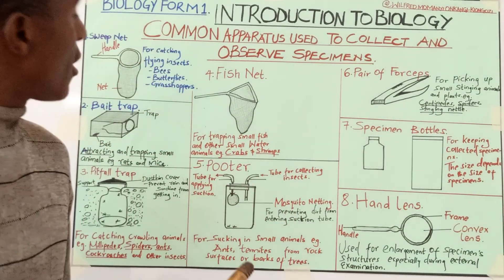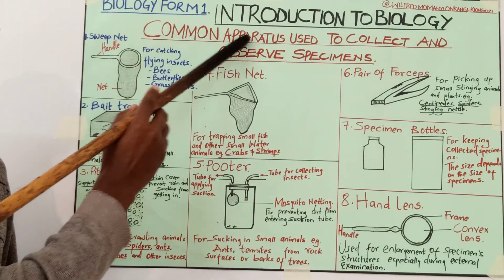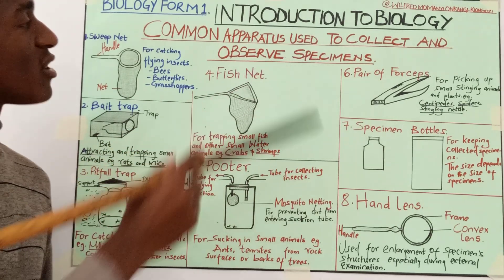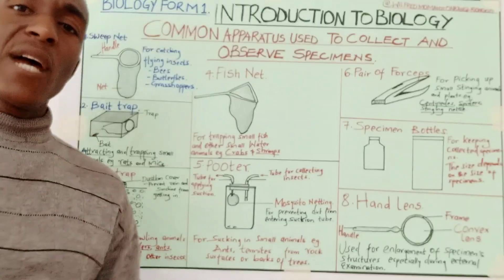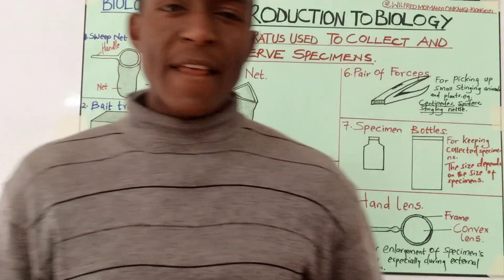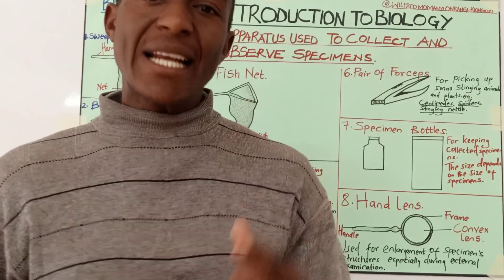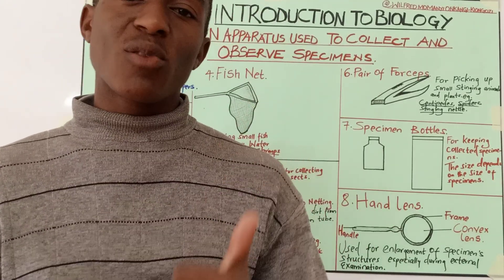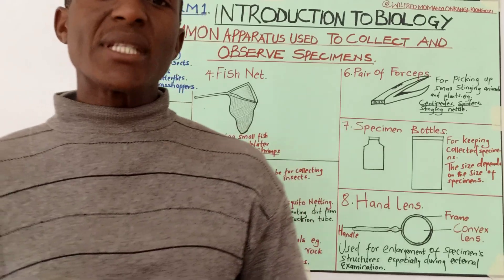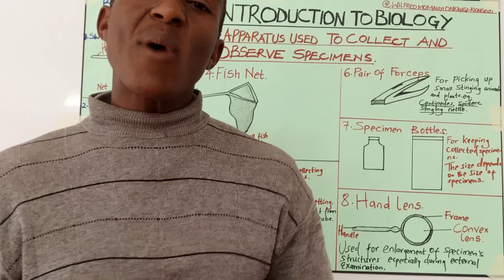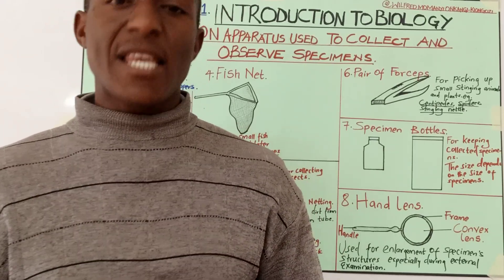It is about the common apparatus used in collection and observation of specimens. In our previous lessons we said that apparatus used in collection, handling, and observation of specimens are very important because they make our work in examining these specimens easy.